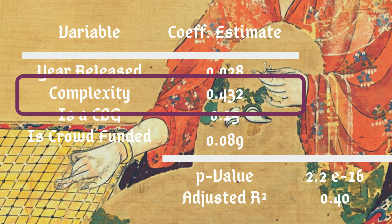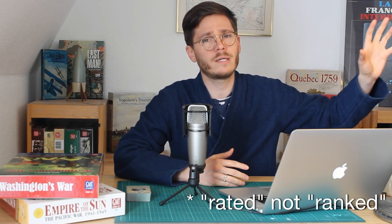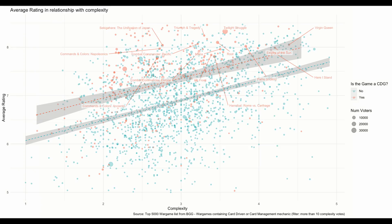Looking into the data, one of the most important factors for the popularity of a war game is its complexity. Weirdly enough, the more complex a war game is, the higher rated it's going to get — but it's not going to get that many owners. It's not because a game is highly ranked that it would get a lot of owners. On the BoardGameGeek thread I will share an infographic with this linear regression that puts complexity in comparison with the average rating, showing non-CDGs against CDGs.